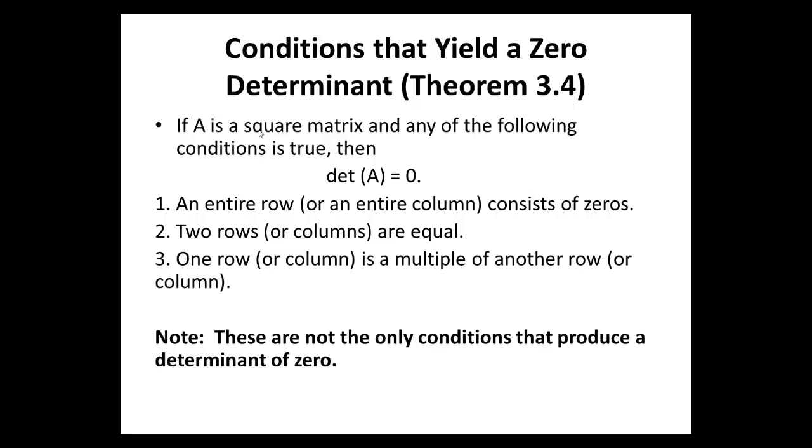Now, there are certain conditions that yield a zero determinant, and that is theorem 3.4 of your text. If A is a square matrix and any of the following three conditions are true, then the determinant of A is zero. Number one: an entire row consists of zeros or an entire column. Two rows are equal. One row is a multiple of another row. If any of these three conditions hold, then we say that the determinant of that matrix is automatically zero. And it's actually very easy to prove all three. So, I'll leave the proofs as simple exercises for serious students. Now, let us know that these are not the only conditions that produce a determinant of zero.